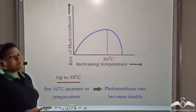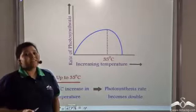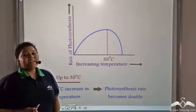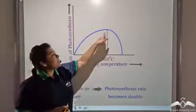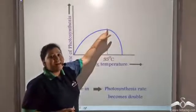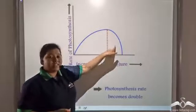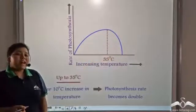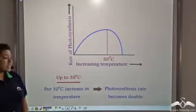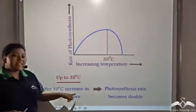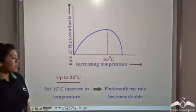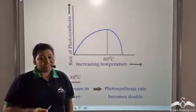Now this optimum temperature at which the rate of photosynthesis is maximum is 35 degree centigrade after which it starts decreasing. Now till 35 degree centigrade per 10 degree increase in temperature doubles the rate of photosynthesis.